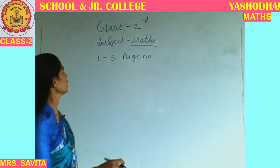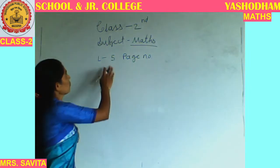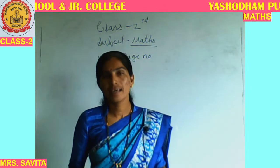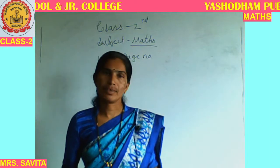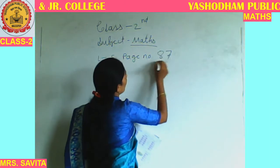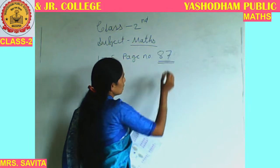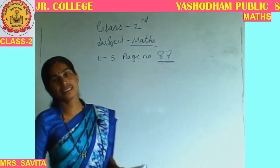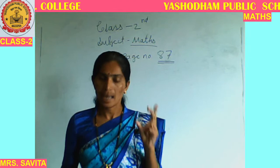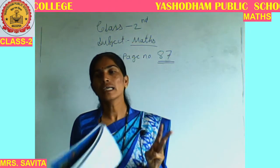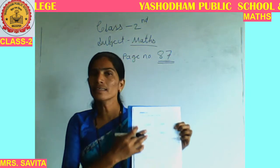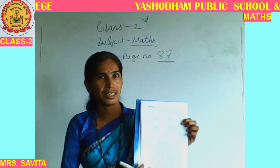This is our math period and we are seeing lesson number 5, page number 87. So you have to open page number 87. In the last period we completed page number 86 — that is exercise A, B, and C. These 3 exercises were completed in the previous period.